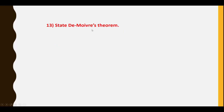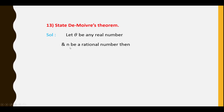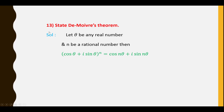Thirteenth question: State De Moivre's theorem. Let θ be any real number and N be a rational number. Then (cosθ + i sinθ)^N = cos(Nθ) + i sin(Nθ). This is the statement of De Moivre's theorem.